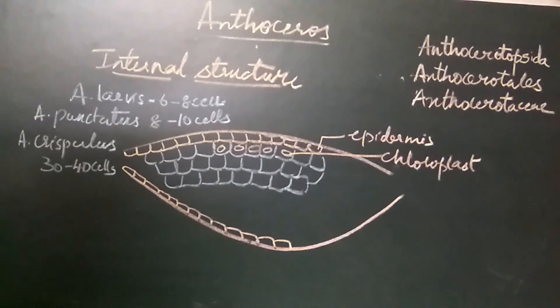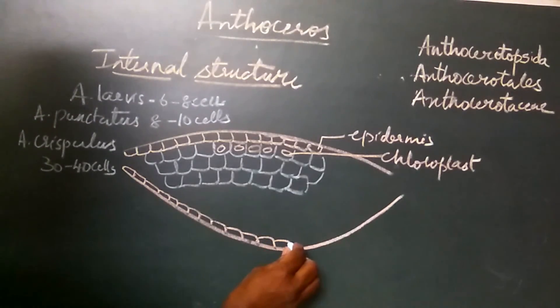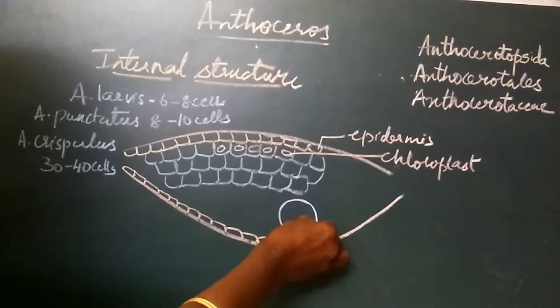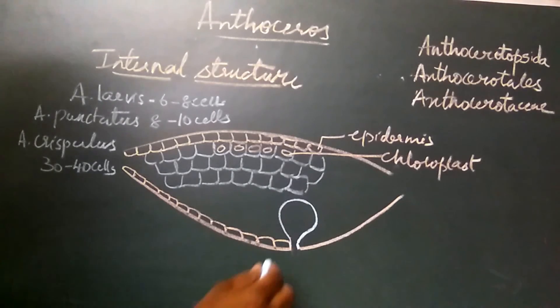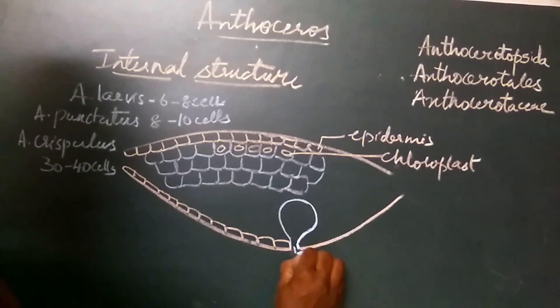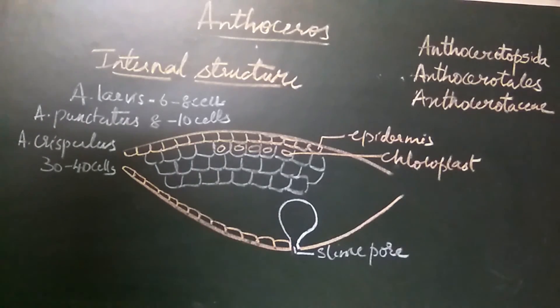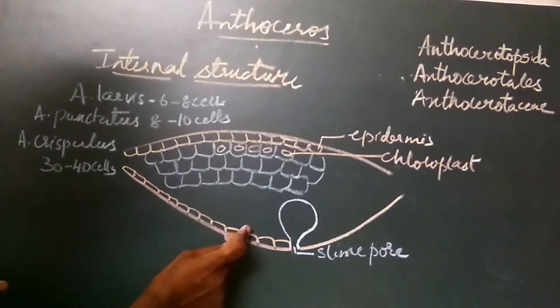There are no air spaces or air chambers which were seen in the thallus of Marchantia. Instead, there are intercellular mucilaginous cavities which open to the outside on the ventral surface through a narrow slit-like structure called the slime pore. These pores are formed by partial separation of epidermal cells creating a slit-like opening.